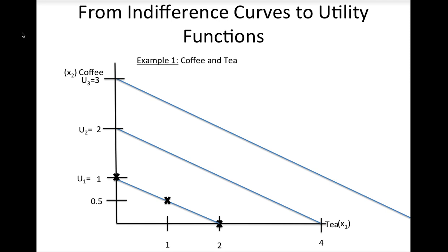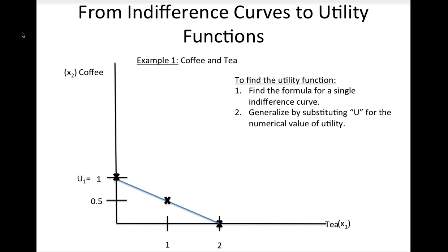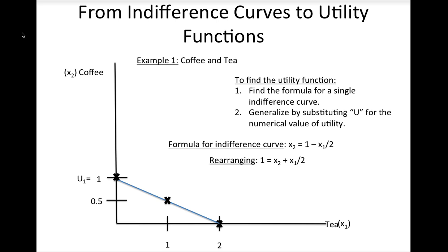Now that we've established the utility values for each indifference curve, in order to find the utility function, simply find the formula for one indifference curve and then generalize by substituting the generic u for the numerical value of utility. Let's simplify by focusing on the lowest indifference curve. Since this is a line, we can use slope-intercept form: x2 equals 1 minus x1 over 2. We can rearrange this to get 1 equals x2 plus x1 over 2. Next, substitute u for the numerical value 1, and we're done. The general formula for the utility function is u of x1 and x2 equals x2 plus x1 over 2.